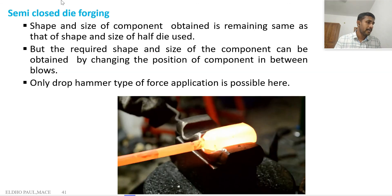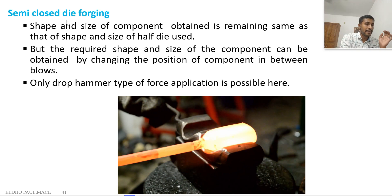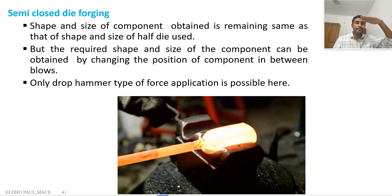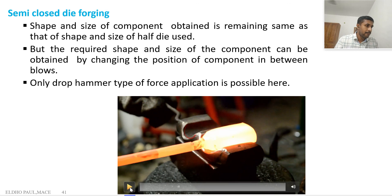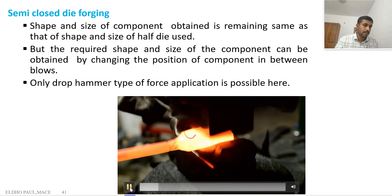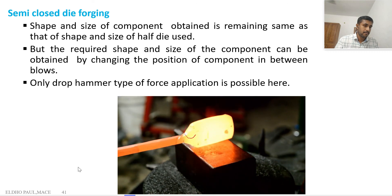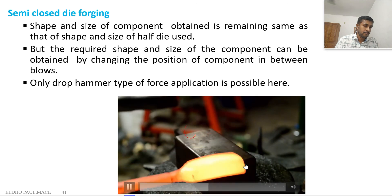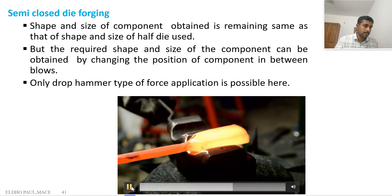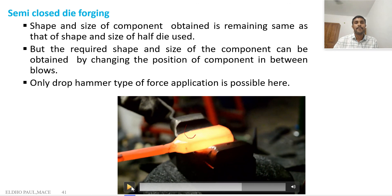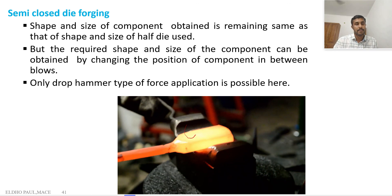Semi-closed die forging is a hybrid of closed and open die forging. One die has a cavity and the other die is flat — the upper die is flat and the bottom die has a cavity. This is a combination of the closed and open die forging processes.